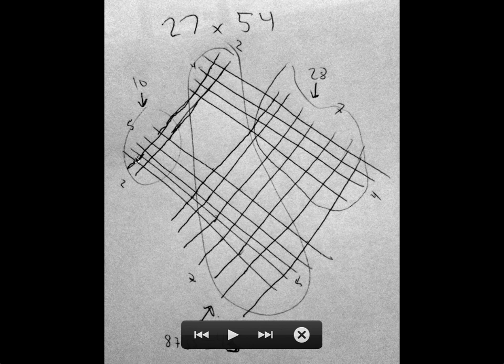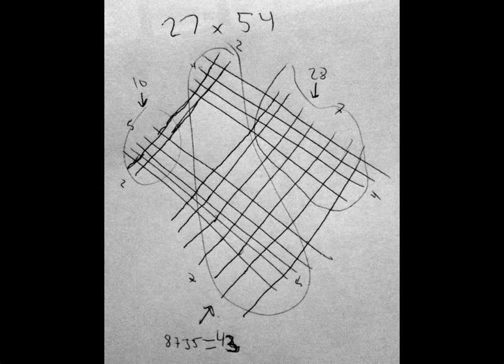So 27 is represented as two lines in this direction and seven lines in this direction. 54 is represented as five lines in this direction, four lines in this direction. And then I'm counting up the crossings so that there's 10 in the hundreds column, making a thousand. There's eight in the tens column up here. And then this is tricky. If you have to actually count these out, you can count out 35 crossings. But this is where it starts to get kind of error prone. A child might make a mistake.